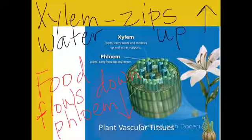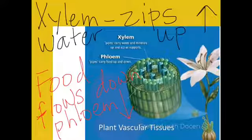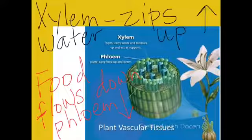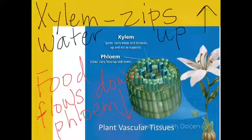Xylem and phloem are found in vascular plants. Water is going to zip up xylem from the roots to the other parts of the plants. Food is going to flow down phloem from the leaves to other parts of the plants. Phloem and xylem look like tiny tubes or hoses that are attached end to end.